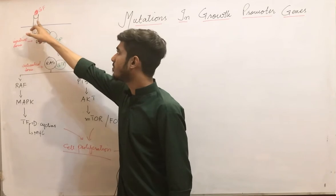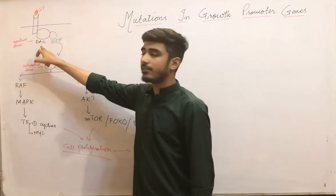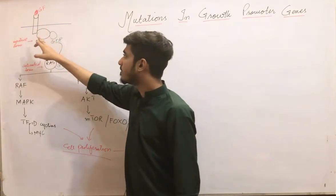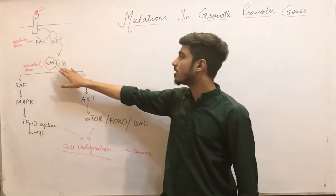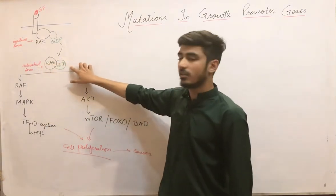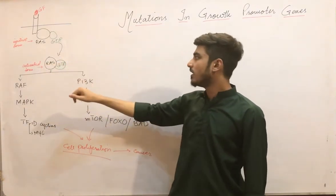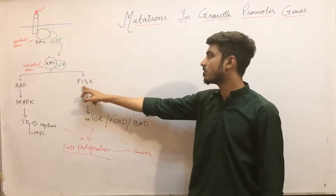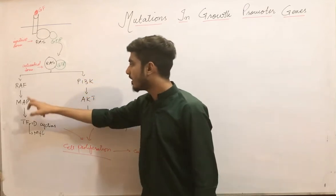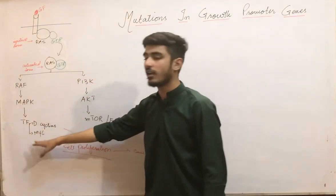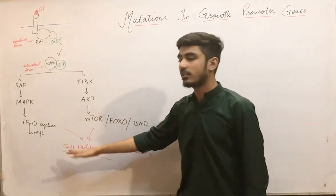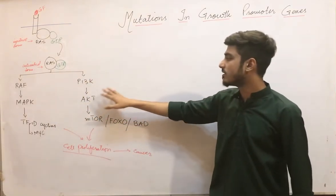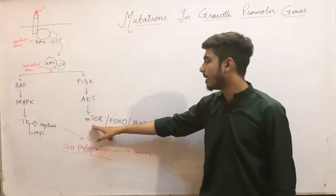When the growth factor attaches to the growth factor receptor, this activates RAS, which has GDP and is normally inactivated. When the growth factor comes, it is converted to the active form coupled with GTP. This RAS then activates two pathways: RAF and PI3K (phosphoinositol 3-kinase), which further activates MAPK, transcriptional factors, and carries on transcription, cell cycle, and proliferation.